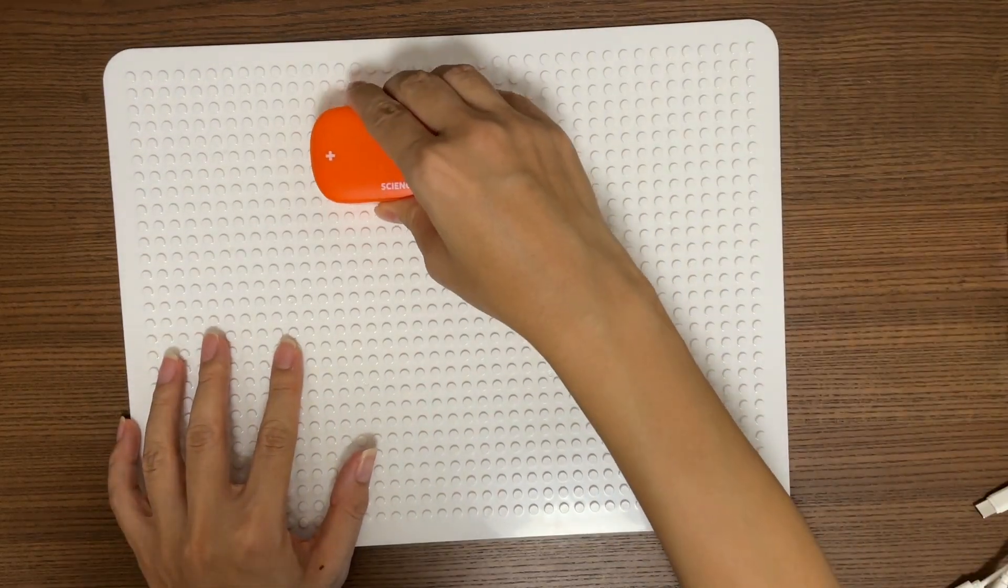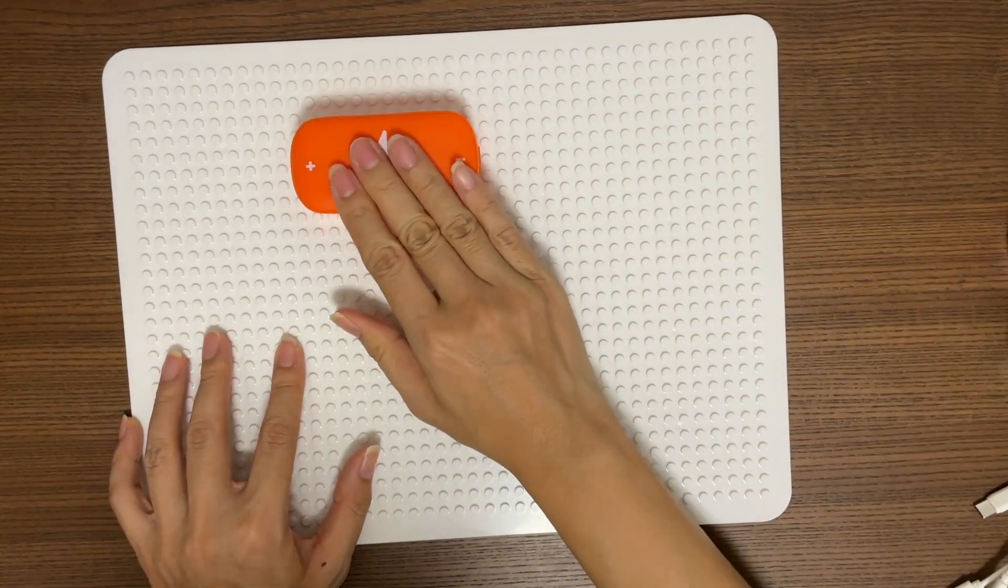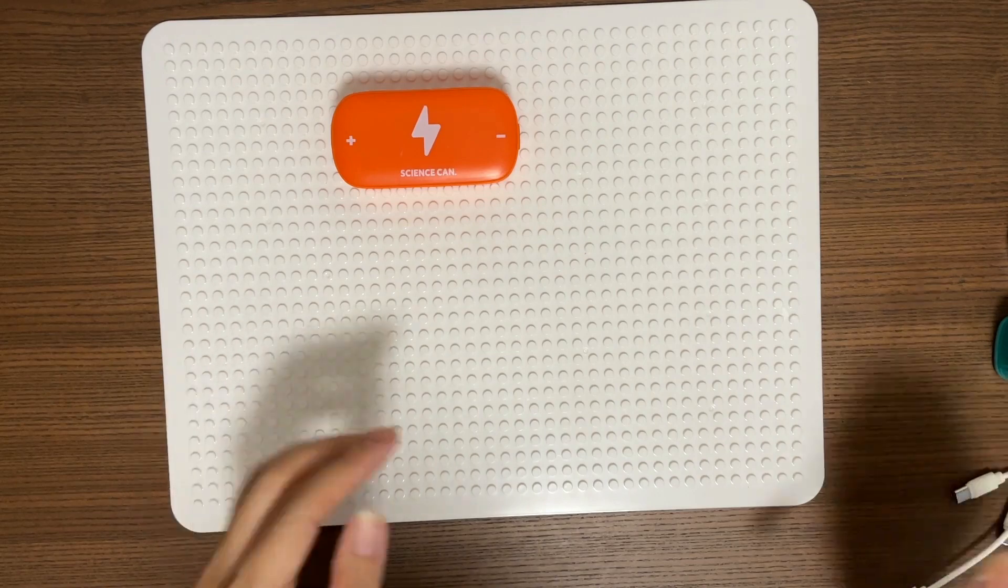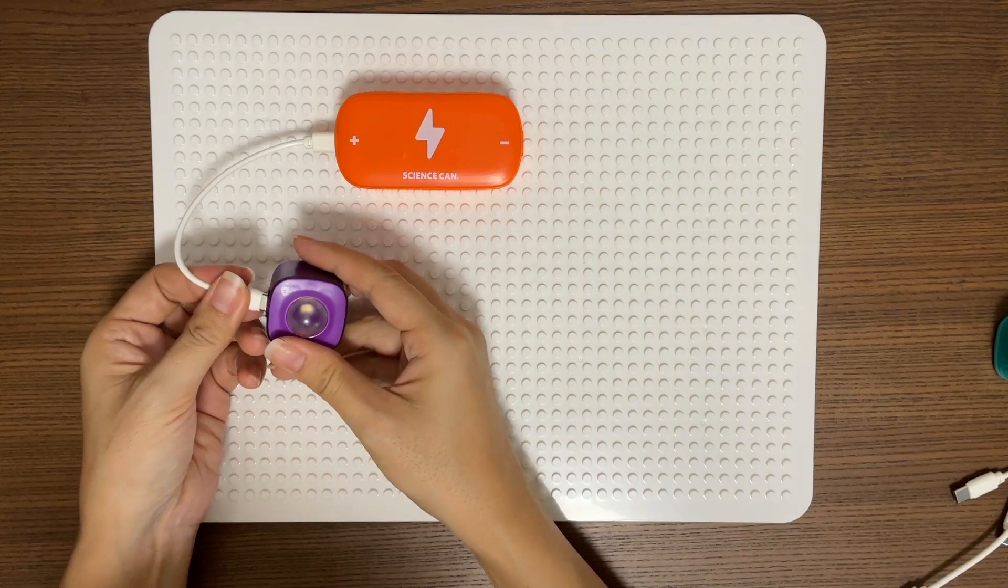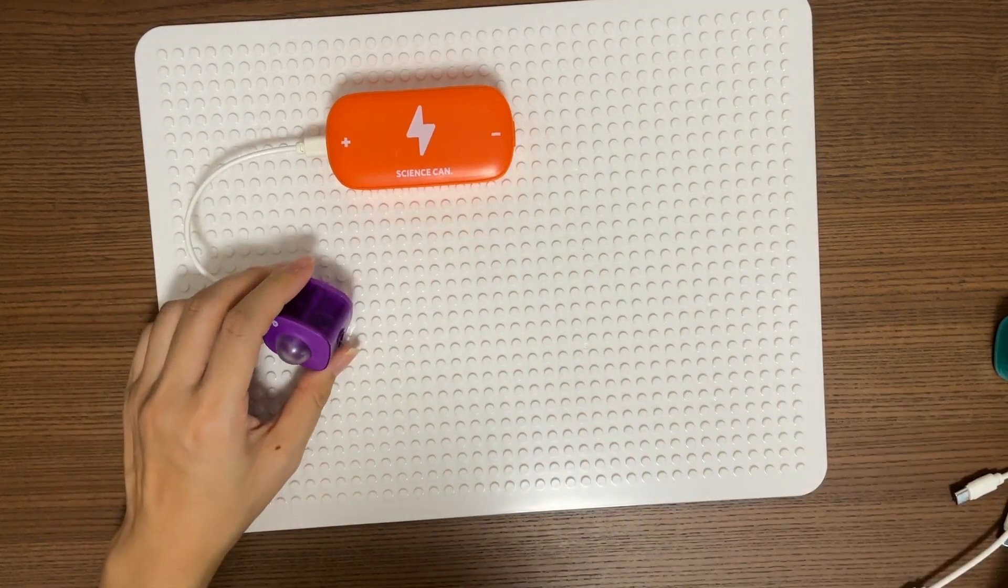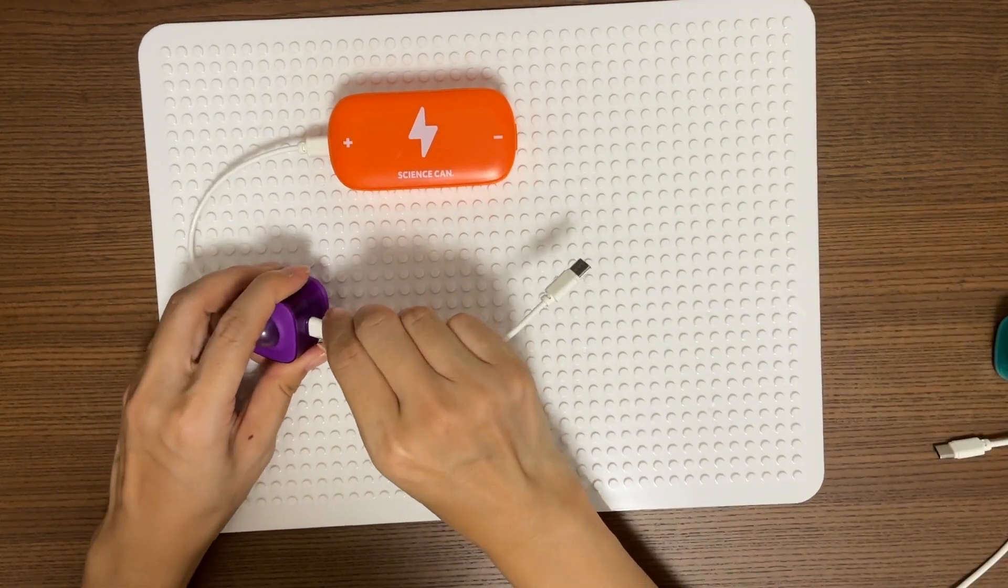First, let's fix the power module. Connect the power module to the light. Connect the light to the knob.